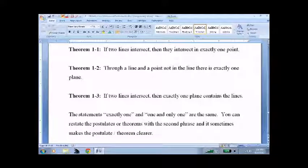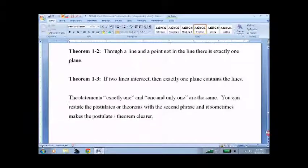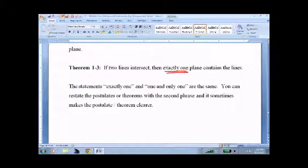Through a line and a point, not a line, there's exactly one plane. And if two lines intersect, exactly one plane contains the lines. Exactly one and one and only one are the same thing.